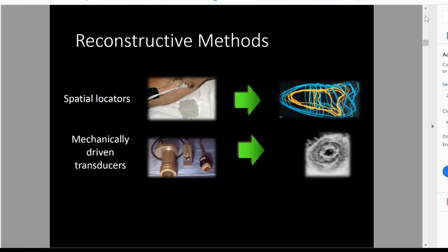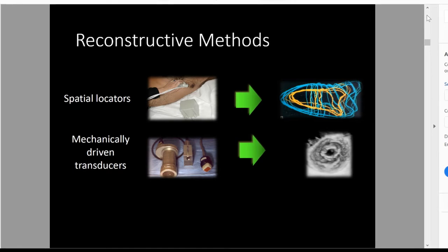Because you can take a 2D image, you can actually take multiple 2D images and fuse those together to create a 3D image. That was the concept in the original 3D images. So you would have a 2D probe, a localizer outside — either a physical localizer or a transducer that rotates automatically — and you would do a series of 2D images which would then fuse to create the 3D image. This is the original 3D.